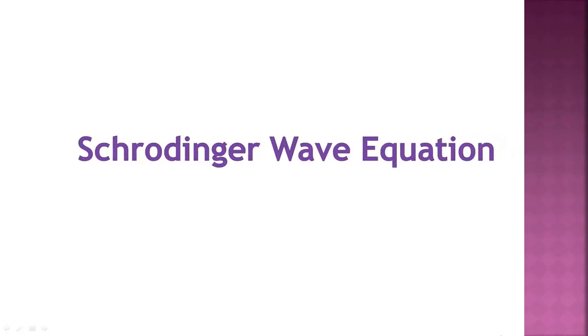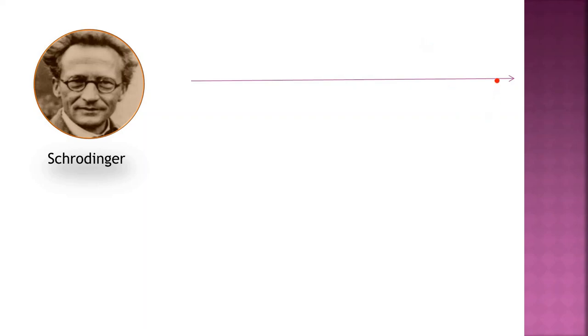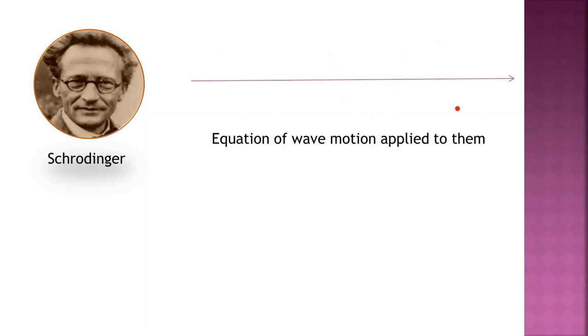Schrödinger Wave Equation. Hello learners, we learned about the dual nature of any moving microscopic particle in de Broglie hypothesis. The scientist Schrödinger also believed in the same hypothesis. He thought that if a microscopic particle like an electron could behave like a wave, then the equation of wave motion could be applied to them. He used the classical time-independent wave equation to describe this particle wave, then substituted the de Broglie relation for lambda, the de Broglie wavelength, and obtained the famous Schrödinger Wave Equation.